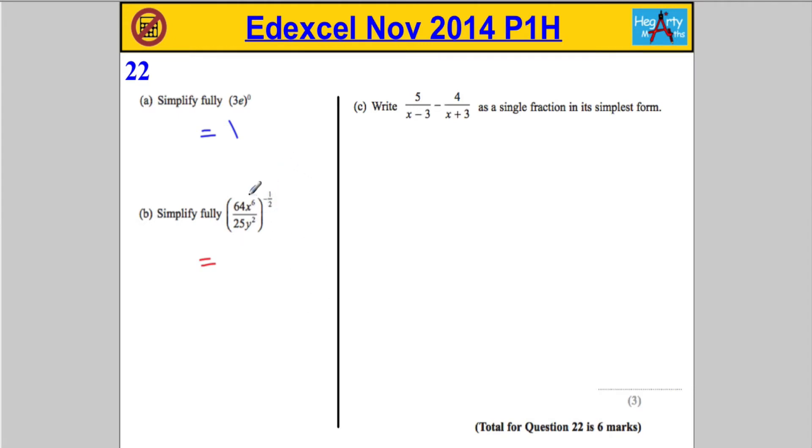When we've got a negative power, what we can do is turn that fraction upside down. 25y squared over 64x to the power of 6. Keep the brackets up. We've got a little error there, so we'll put the squared. And the power now is no longer negative. It becomes positive.